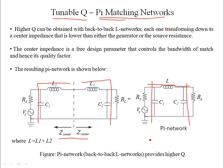The pi matching network is composed of back-to-back L networks, which can provide a higher Q. A higher Q means the bandwidth of the match is narrow at the design frequency. These networks can produce a higher Q with each back-to-back L network transforming down to a central impedance.